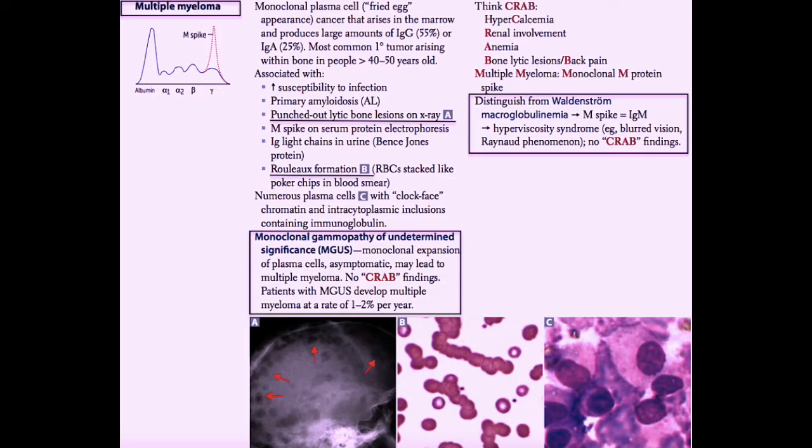We call the spike the M-spike, and it can either be secondary to increased IgG production, so a monoclonal IgG. That's most common. The multiple myeloma can also produce a monoclonal IgA. And so either one is going to give you an M-spike on the protein electrophoresis.